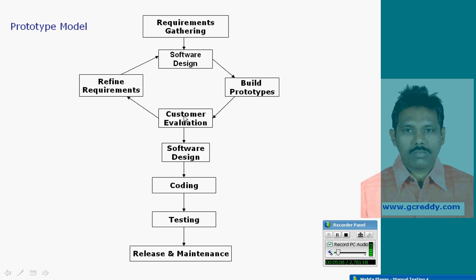One iteration, two iterations, three iterations — up to getting clear requirements. After customer confirmation, again software design — designing software for clear, correct, and complete requirements. After that, coding, then formal testing, release and maintenance. This is about the prototype model.